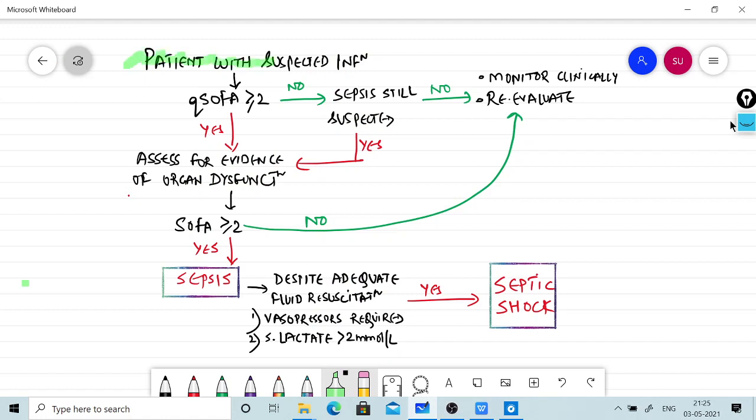Whenever a patient with suspected infection comes to us, first of all we will calculate the quick SOFA score. If the quick SOFA is less than 2 and the patient is clinically not suspected of sepsis, then we will monitor the patient clinically and evaluate again.